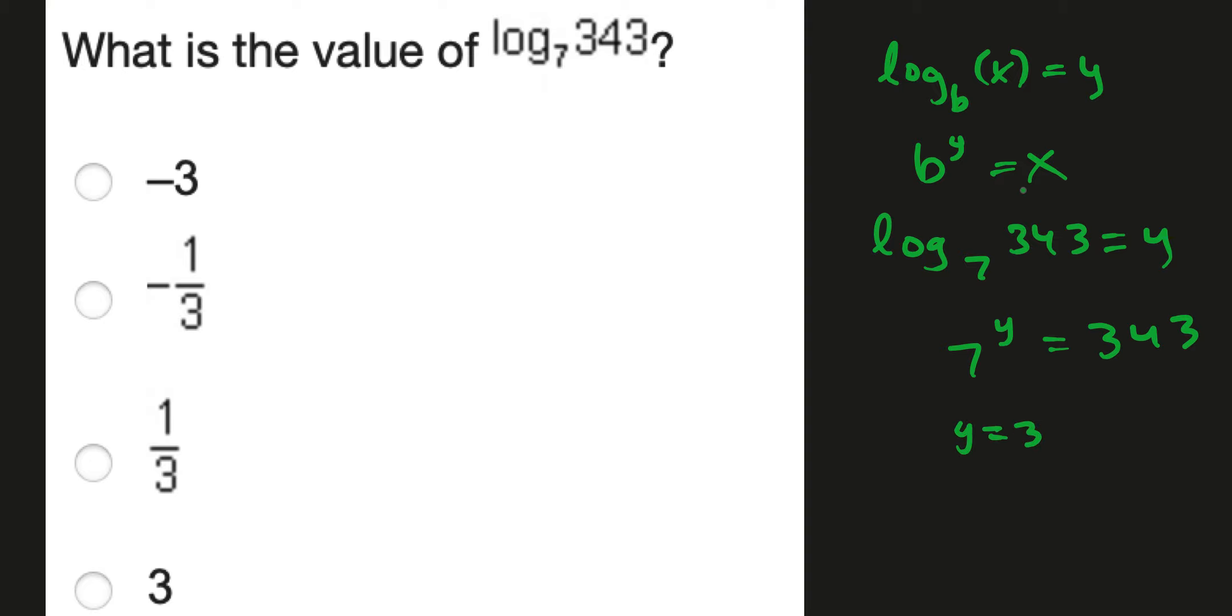So see here, y is the solution. Both of these are equivalent, so y equals 3 is our answer. But we can just check that 7 times 7 times 7 equals 343.